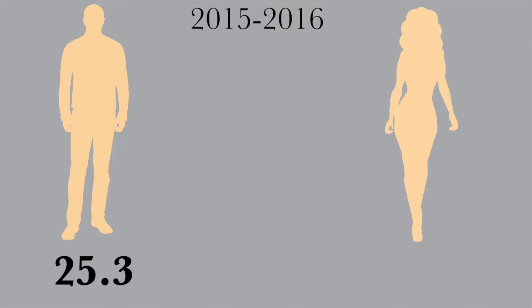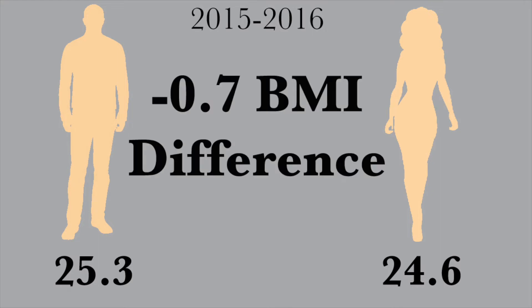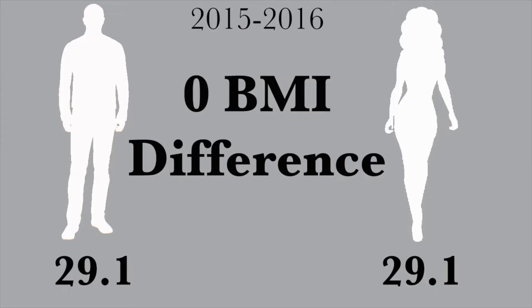For the non-Hispanic Asian group, members have the lowest BMI of all groups — and this applies to both sexes. The average BMI for men is 25.3, and for women the average BMI is 24.6, a difference of 0.7. The non-Hispanic Asian group is the only racial group in which the average female BMI is lower than that of the men. In every other Hispanic origin category, females have a higher BMI than men.